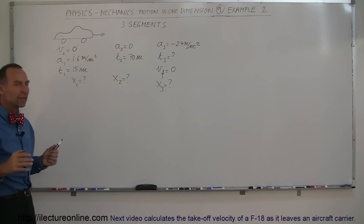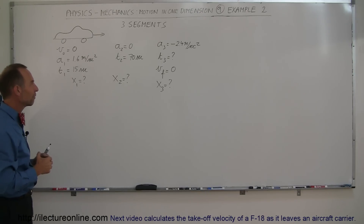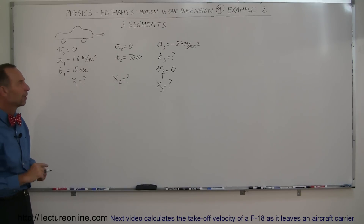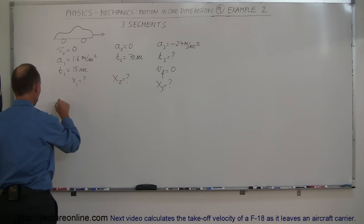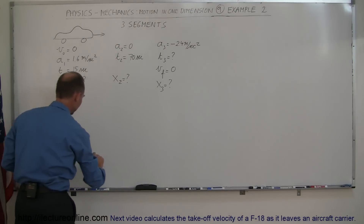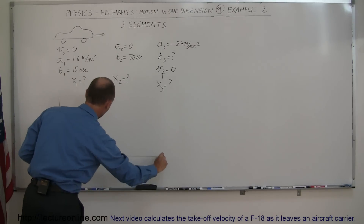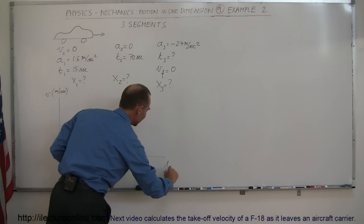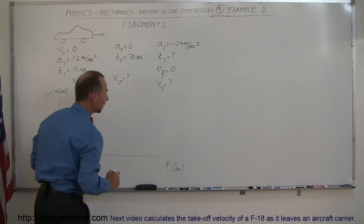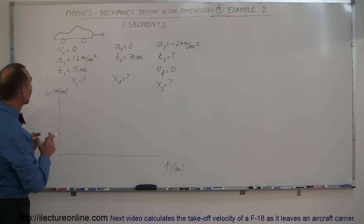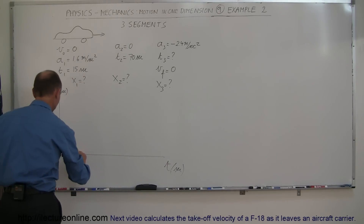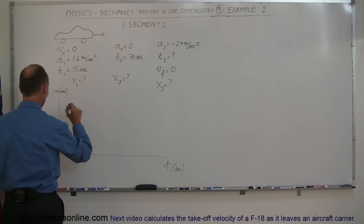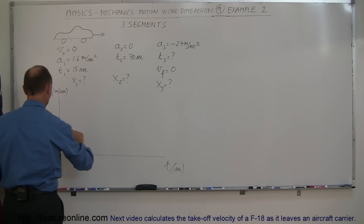Let's make a graph of velocity versus time — that's probably our best bet. Here's our velocity versus time graph: velocity in meters per second versus time in seconds. In the first 15 seconds, it accelerates at a constant acceleration of 1.6 meters per second squared for 15 seconds.